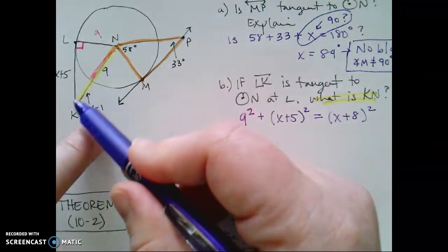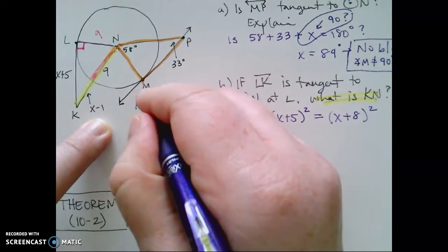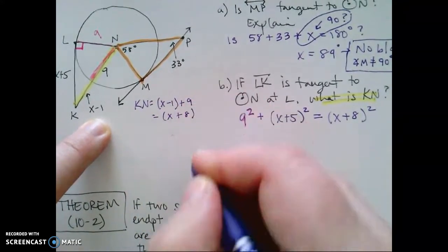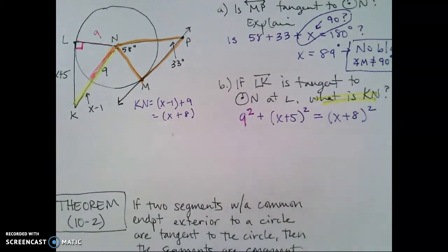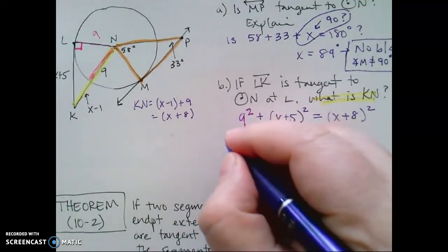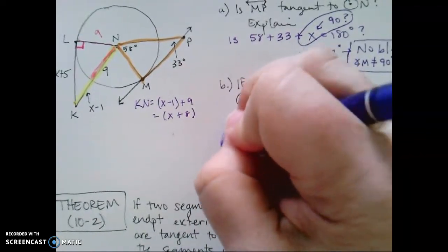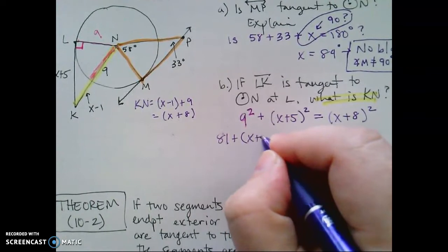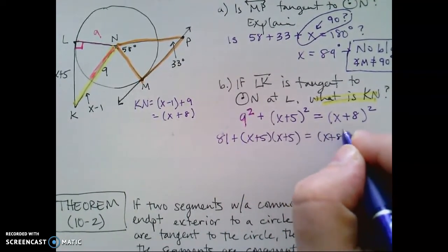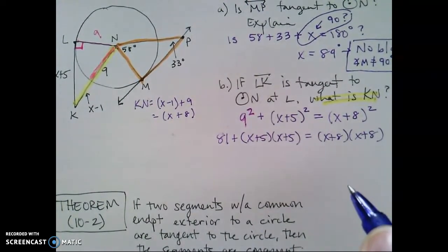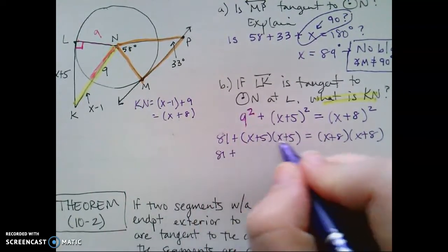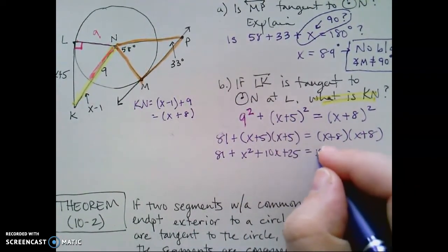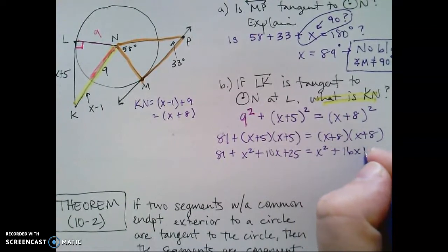Let me say that again. This entire segment, KN, KN is going to be x minus 1 plus 9, which is x plus 8. So for the full triangle, I'm going to use the Pythagorean theorem here. Remember, exponents don't distribute, so we're going to have to expand. 9 squared is 81. This is going to be x plus 5 times x plus 5, and then x plus 8 times x plus 8. We're going to distribute correctly. So 81 plus, and this is going to be x squared plus 10x plus 25, and this side is going to be x squared plus 16x plus 64.